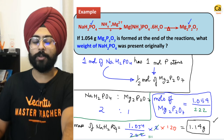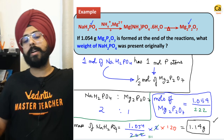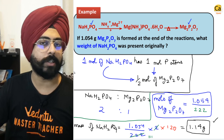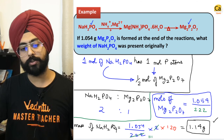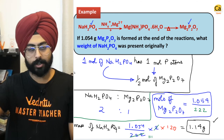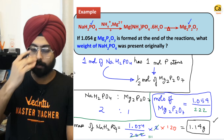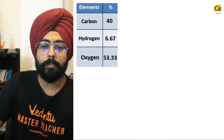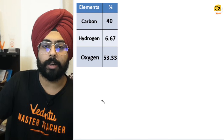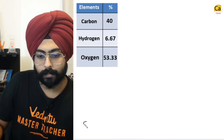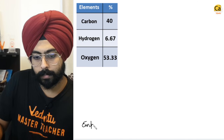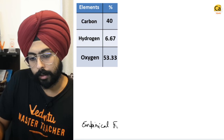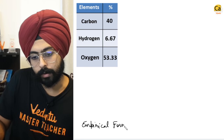Now that we've spent around half an hour understanding the Principle of Atomic Conservation, let's jump to the next topic of today's class — the Empirical Formula.